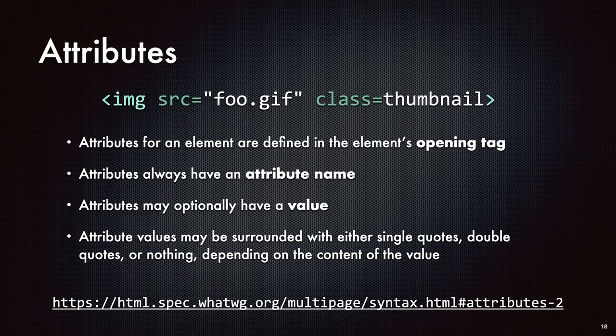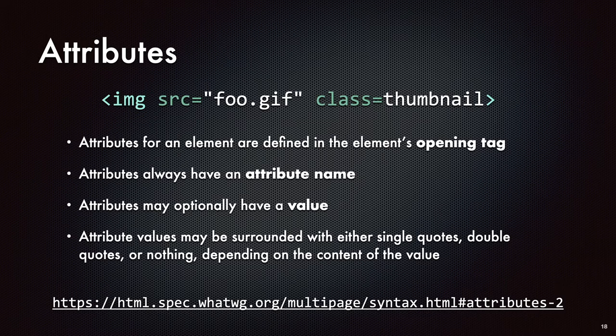And then we define our source attribute. Attributes can have values, and if they do there's going to be a key-value pair: the attribute name, an equal sign, and then a string containing the value. For the source of our image, you'd have SRC equals, then some quotes, then something like foo.gif, then closing quotes — defining the attribute to say this is where to get the image source.